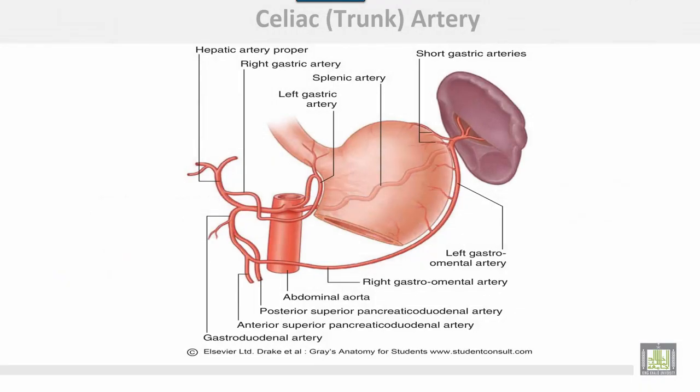This is the celiac trunk arising from the abdominal aorta at the last thoracic vertebra. It gives three terminal branches: left gastric, splenic, and the common hepatic artery.